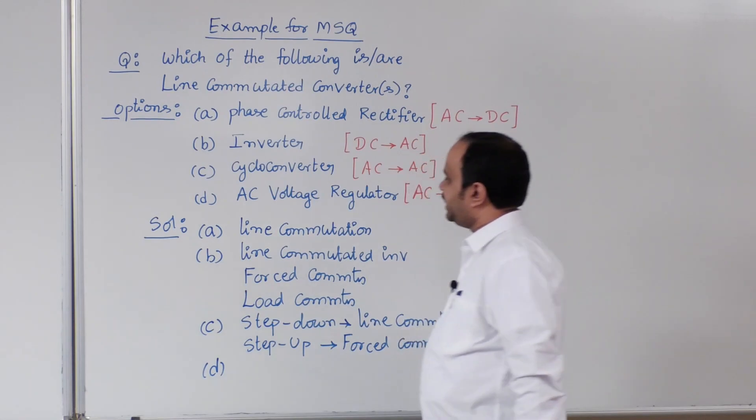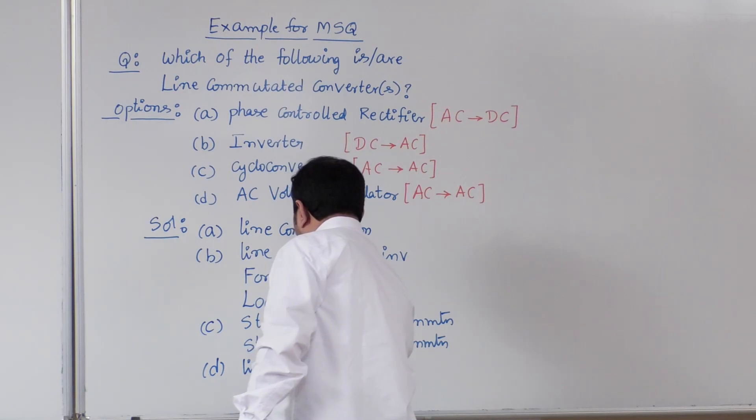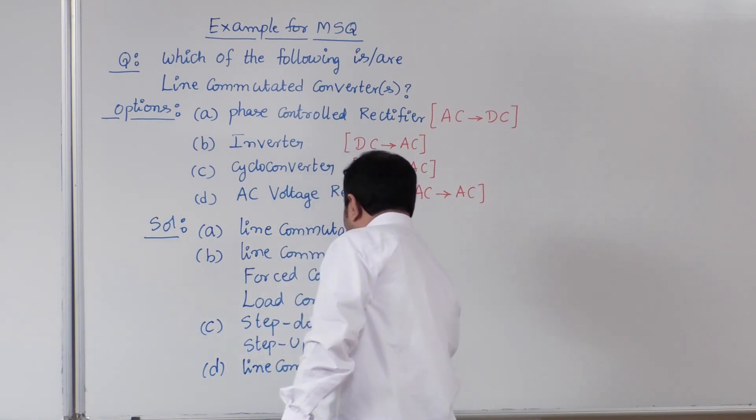For option D, AC voltage regulator, AC voltage regulator will have line commutation.